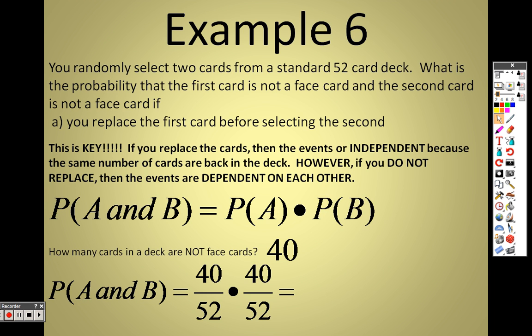I put the card back in the deck, and I pick again. What's the probability that it will not be a face card? Again. The reason that is, is because I put the card back in. That's why it's 40 out of 52, again. So, 40 out of 52, times 40 out of 52, we end up with 59.17%.